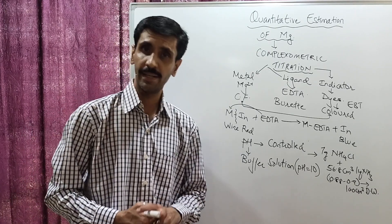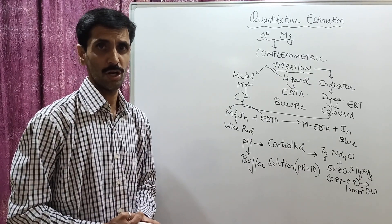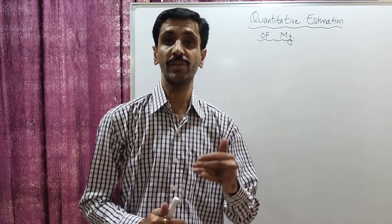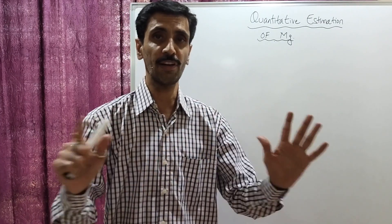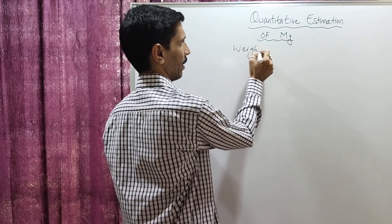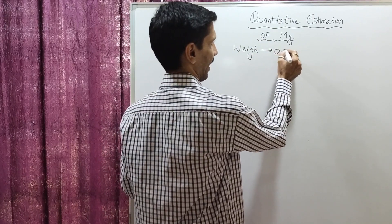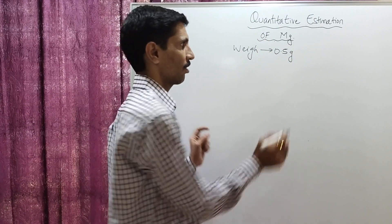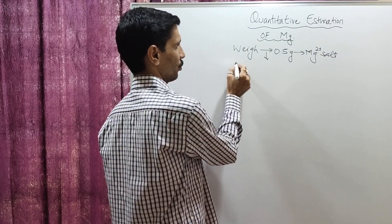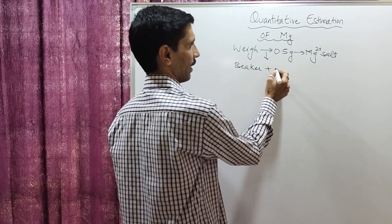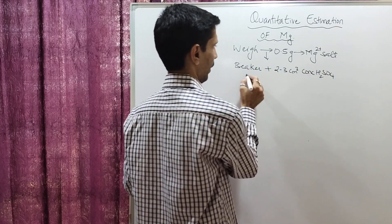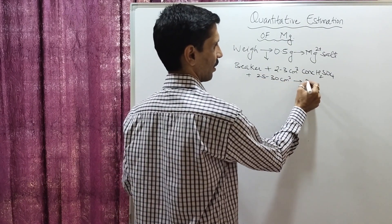That covers the theory behind the complexometric estimation of magnesium. Now for the procedure: first, weigh approximately 0.5 grams of the magnesium salt using an accurate balance. Transfer it into a beaker, then add around 2 to 3 cm³ of concentrated sulfuric acid and around 25 to 30 cm³ of distilled water.